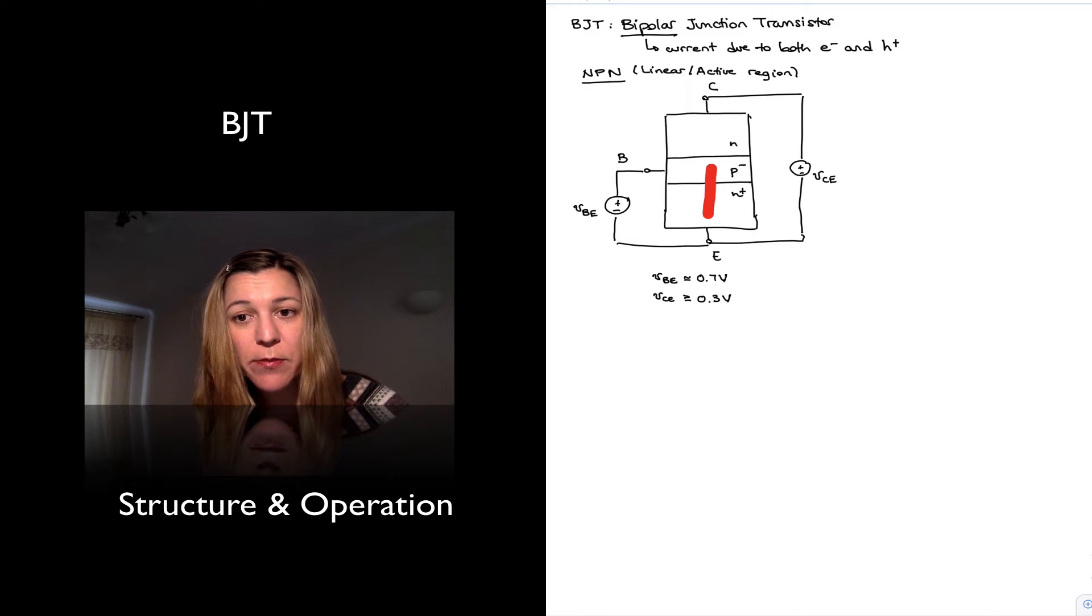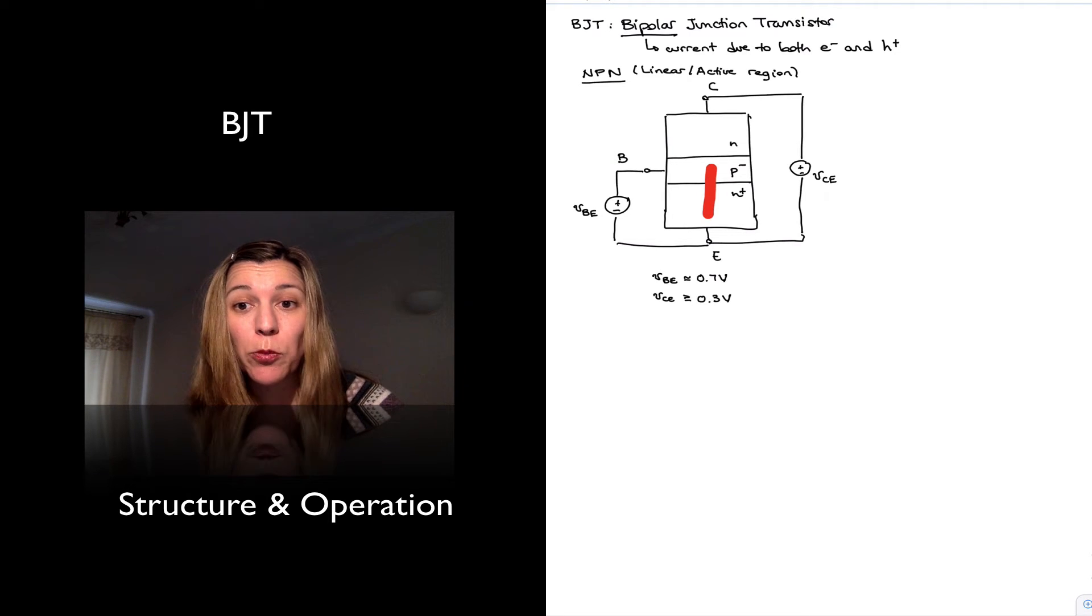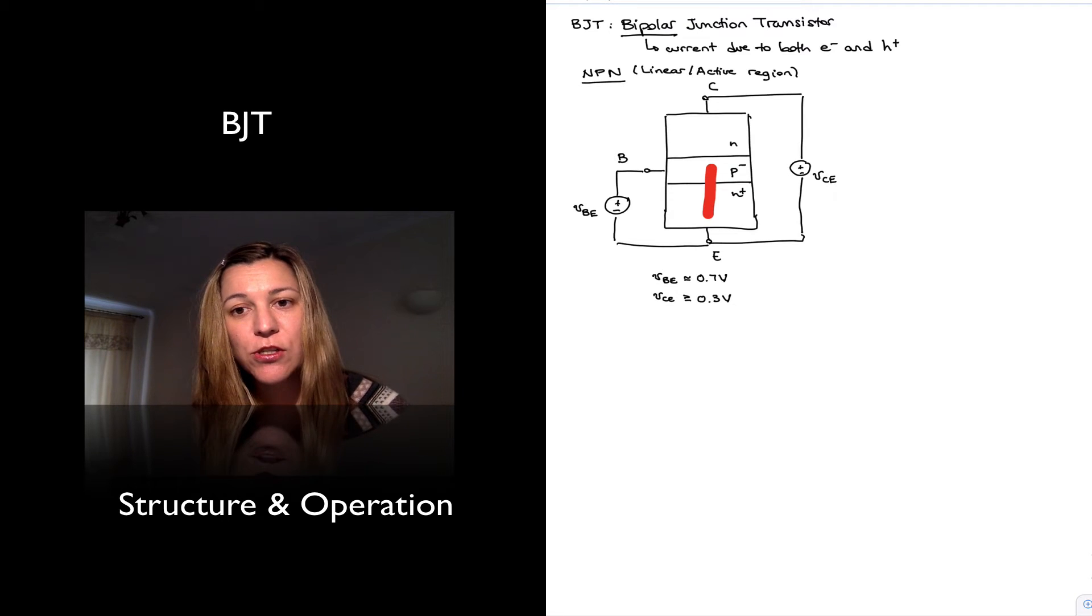Now, we just mentioned that the base is narrow and is lightly doped, which means there are very few holes for those electrons that are injected from the emitter into the base to recombine. And so most of the electrons will have a long lifetime in the base, which means they will not recombine with available holes. Because we have also an electric field between collector and emitter, that electric field is attracting those electrons that have not recombined and that are in the base. It's attracting them towards the collector.